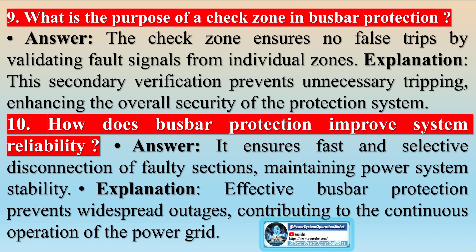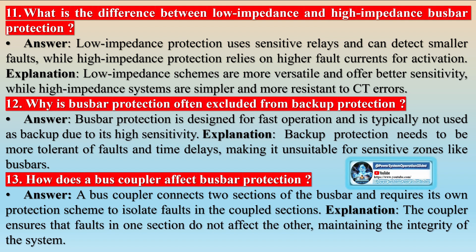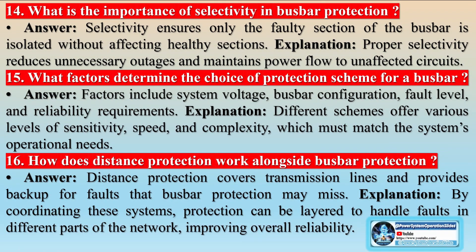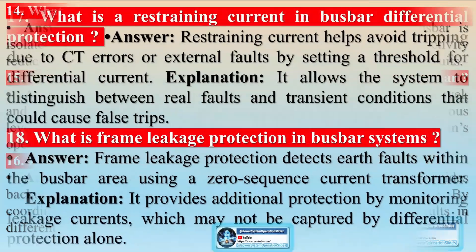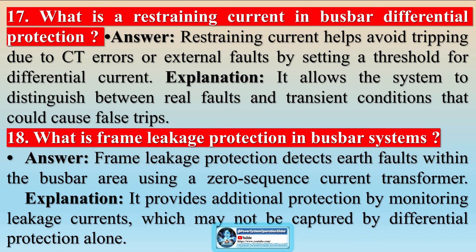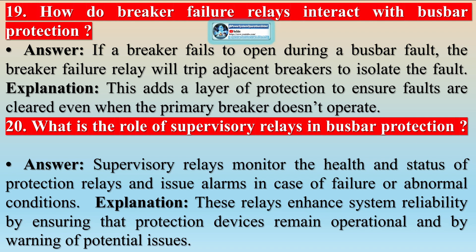Kirchhoff's current law states that the vector sum of all currents at a node or bus is zero. Current transformers monitor currents entering and leaving a bus, and bus differential protection compares incoming and outgoing currents — any significant difference indicates a bus fault requiring quick isolation. Bus differential relays detect differential current and trip associated breakers to isolate faults. Unlike transformer differential relays, they do not require magnitude or phase angle compensation, nor do they need to handle magnetizing inrush currents. In a simple implementation, CTs from all circuit breakers on the bus are paralleled, all with the same ratio, and a simple scheme uses an instantaneous overcurrent element with a sensitive pickup, assuming no current flows to the relay under normal conditions.